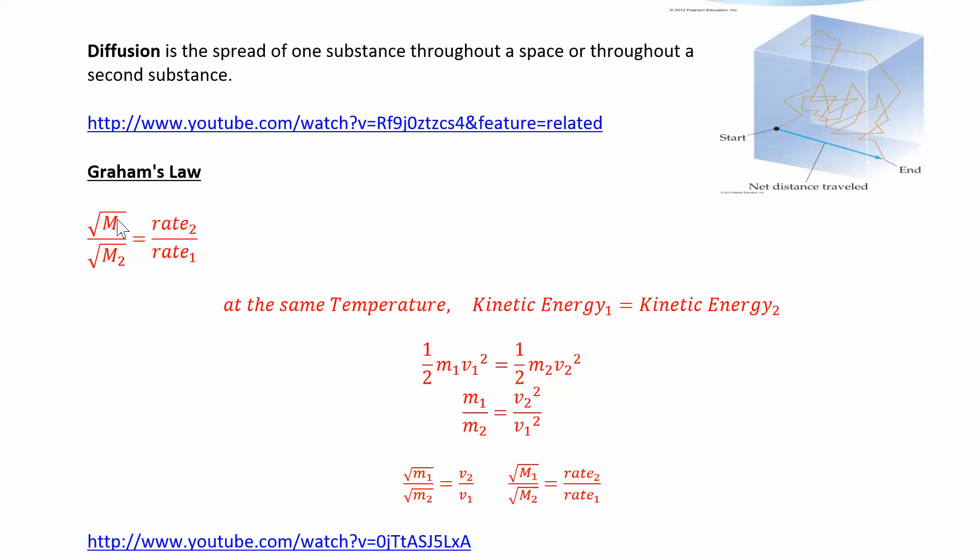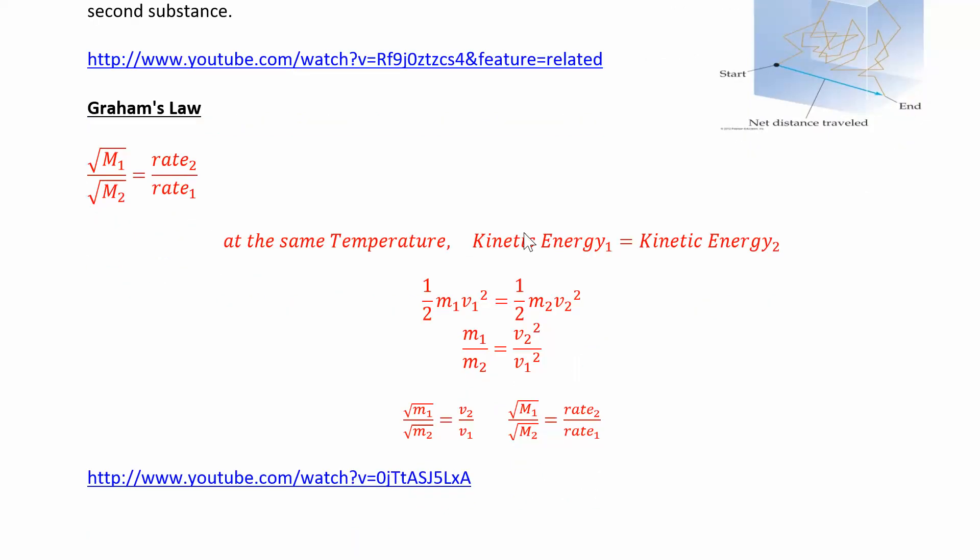So this is the equation. Square root of the molar mass 1 over square root of molar mass 2 is equal to rate 2 over rate 1. And we're deriving this equation from this equation right here. So I derive this a little bit differently than they do it in the book. But if kinetic energy 1 equals kinetic energy 2, so suppose you're not changing the temperature, as long as you're at constant temperature, this is going to work.